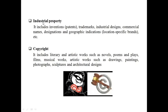Industrial property includes inventions (patents), trademarks, industrial designs, commercial names, designations and geographic indications like location-specific brands. Copyright includes literary and artistic works such as novels, poems and plays, films, musical works, artistic works such as drawings, paintings, photographs, sculptures and architectural designs.